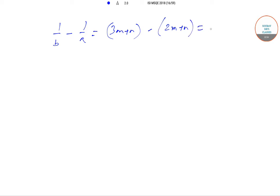And 1/c minus 1/b will equal (4M + N) minus (3M + N), which equals M. So basically, we can write that 1/b minus 1/a equals 1/c minus 1/b, which equals M.